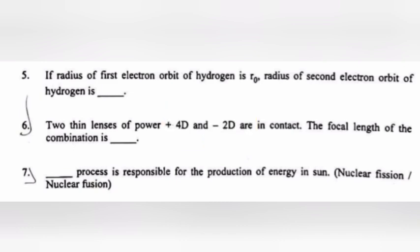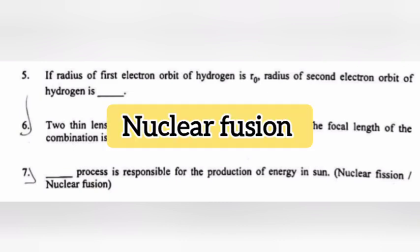Question 7: Dash process is responsible for the production of energy in sun. Answer: Nuclear fusion.